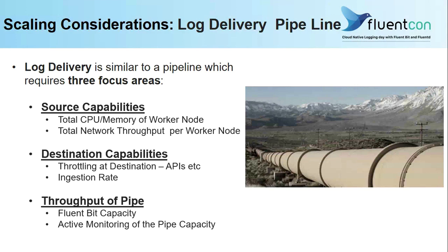Second, you need to consider your destination capabilities. What is the ingestion rate that your destination can consume? This destination can be Kinesis Data Stream, CloudWatch Logs, or any other destination. You need to understand the throttling and ingestion rate of your destination, as this has a direct impact on your throughput and performance of your log delivery pipeline.